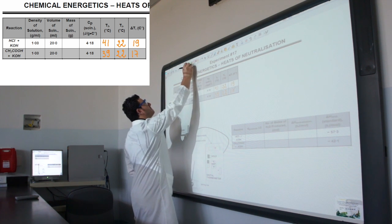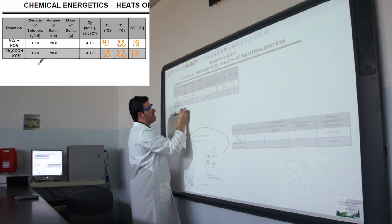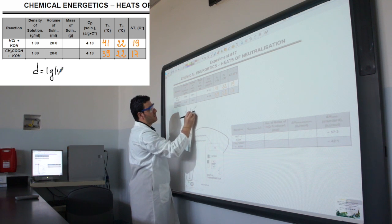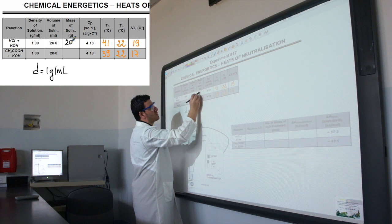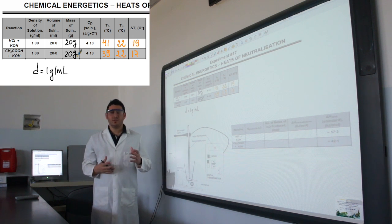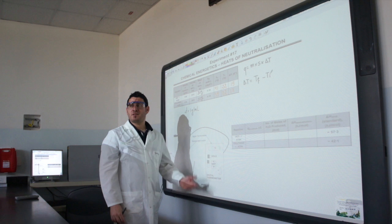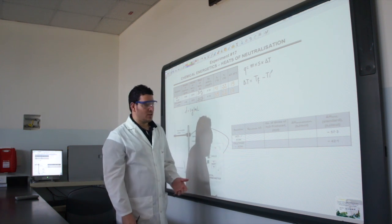Once you have these data, you can calculate the mass of the solution from the volume since density we will take it as one gram per milliliter. So the 20 milliliters should give you 20 grams. Now that you have all the data in this table, you can simply calculate the heat which is equal to the mass of the solution multiplied by the specific heat capacity of the solution multiplied by delta T. Keep your delta T always positive, so it's going to be T final minus T initial.